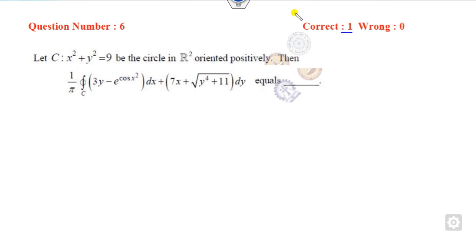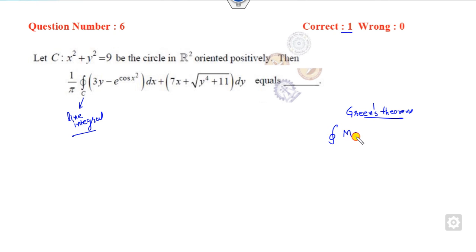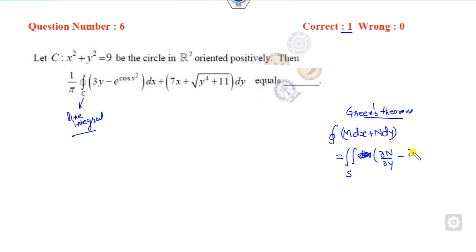Look at the next question, which is related to the line integral. Remember: whenever there is a line integral, you should apply Green's theorem — that is one of the simplest ways to solve it. Green's theorem states that if you express the terms as M dx plus N dy, you can write it as a surface integral of the partial derivative of N with respect to x minus the partial derivative of M with respect to y, over the surface.